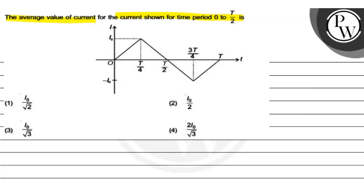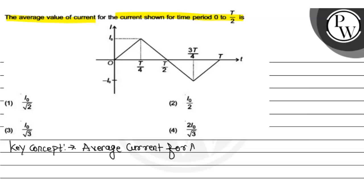First of all, we need to know what the average value of current is. The key concept here is: we need to know the average current for AC. Average current for AC is defined as that DC current which, when transferred across the circuit, will produce the same amount of charge for the same duration of time.